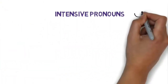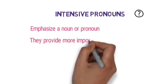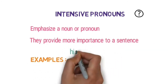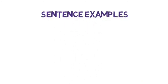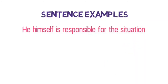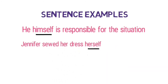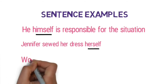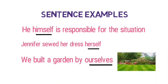Let's talk about intensive pronouns. What are they and when do we use them? We use them to emphasize a noun or pronoun — they provide more importance to a sentence. Examples: himself, herself, yourself, themselves, ourselves. 'He himself is responsible for the situation' — 'himself' is the intensive pronoun, showing that he is responsible and no one else. 'Jennifer sewed her dress herself' — we are pointing that Jennifer did it, not her mother, not her granny, but Jennifer. 'We built a garden by ourselves' — 'ourselves' is the intensive pronoun.